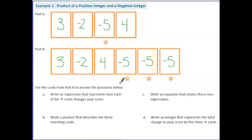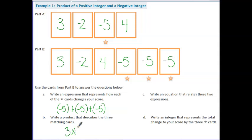Use the cards from part B to answer the questions below. Write an expression that represents how each of the star cards changes your score. Notice that each time I add one of these star cards, my score will decrease by 5. So we can show that by adding up negative 5s three times. Part B says write a product that describes the three matching cards. We know that multiplication is repeated addition, so what I am repeating here is three negative 5s — this would be 3 times negative 5. This is basically interpreted as picking up three negative 5s, so these two expressions are equivalent to each other.